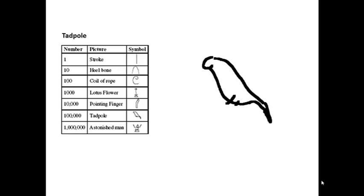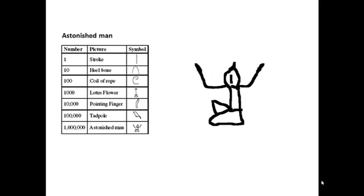The sixth symbol is a tadpole — some people think this is a bird — which is a hundred thousand. And the last one is the astonished man for a million. Some people would call this a praying man.